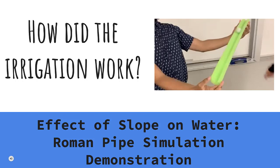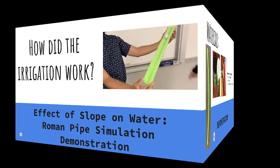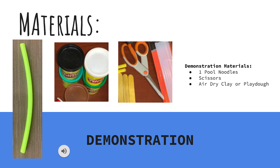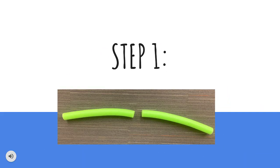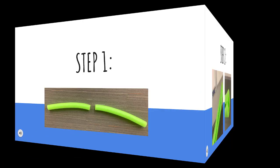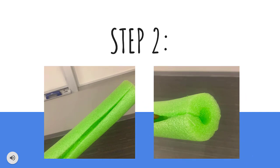Now let's get into the materials needed for the project. The materials needed for this demonstration include one pool noodle, scissors, and some Play-Doh or air-dry clay. Step one: cut the pool noodle in half. Step two: cut the pool noodle from top to bottom — we will show you on the next slide how it will look.